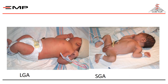On the left is a large for gestational age neonate, with weight above the 90th centile for age. On the right is a small for gestational age neonate, with birth weight less than the 10th percentile for age.